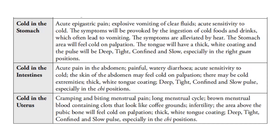Cold in the stomach: there will be acute epigastric pain, explosive vomiting of clear fluids, acute sensitivity to cold. The symptoms will be provoked by the ingestion of cold foods and drinks, which often leads to vomiting. Symptoms are alleviated by heat. The stomach area will feel cold on palpation. The tongue will have a thick white coating and the pulse will be deep and tight, confined and slow, especially in the right guan positions.